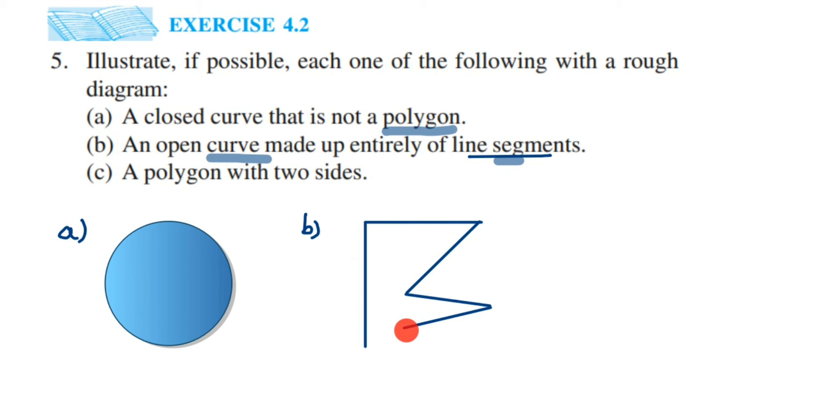Now the next question is a polygon with two sides. We know that polygon is a closed curve, means it should be completely closed, the starting point and end point should be the same, and they're saying only two sides. So do you think it is possible to make a polygon with two sides?